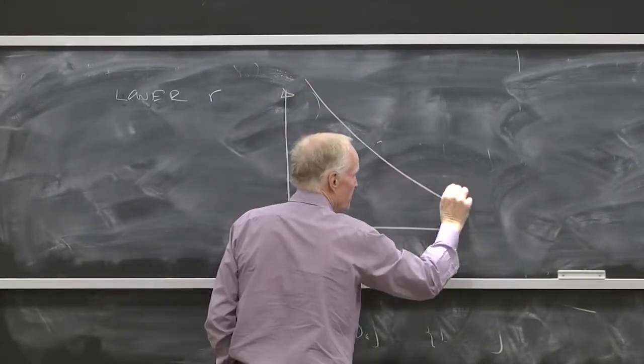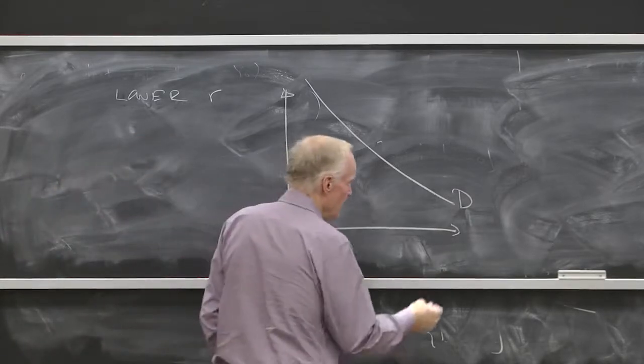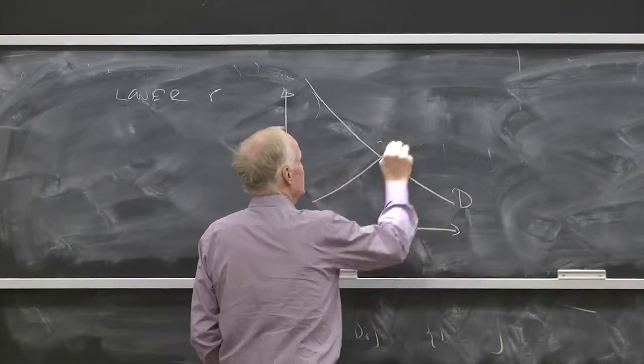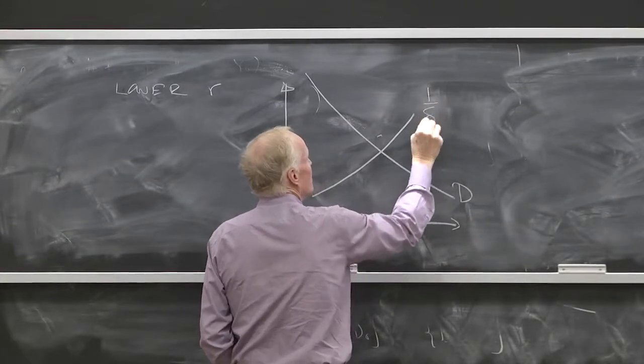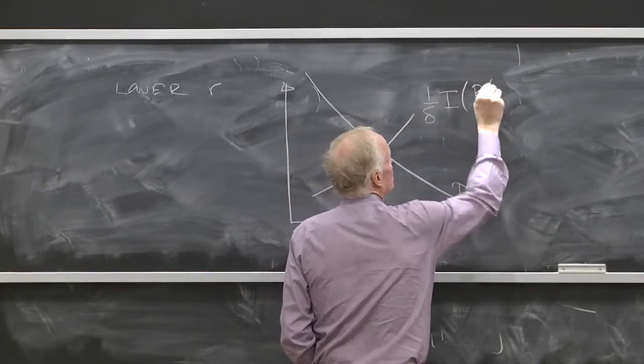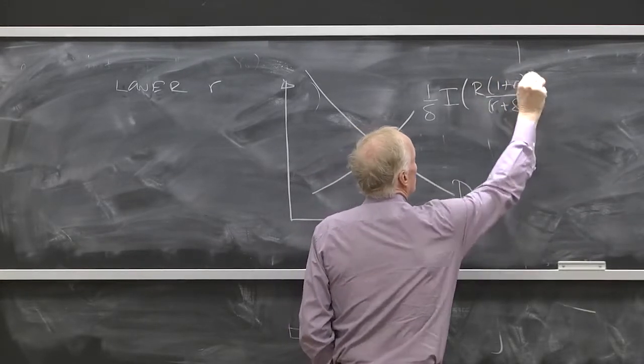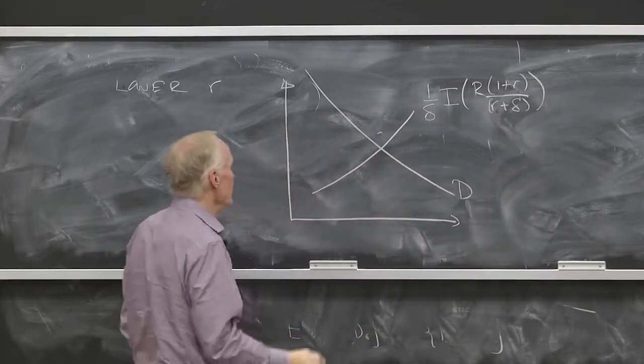we had our demand for housing and our steady state supply, which is 1 over delta I of R times 1 plus R over R plus delta. That was our steady state.